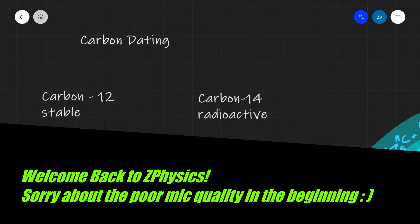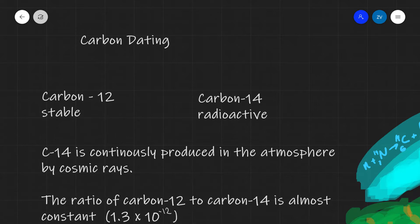Today we're going to be discussing carbon dating. Carbon dating is a really interesting technique that is used to estimate the age of dead living organisms. It has vital importance in fields such as archaeology and can be used to estimate the age of objects up to 50,000 years of age.